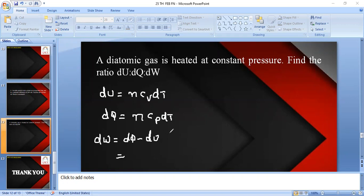This is equal to nCp dT minus nCv dT. The n dT is taken commonly, then n into (Cp minus Cv) dT. These three are the general formulas for dQ, dU, and dW in case of constant pressure conditions.